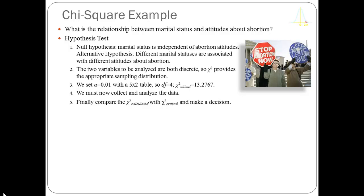Let's look at an example from the General Social Survey and look at computer output typical from something like SPSS or SAS — in this instance I'm going to use STATA. In the GSS we have a variable that measures marital status: married, separated, widowed, divorced, or never married. We have another measurement which asks whether a woman should be allowed to have a legal abortion for any reason. Both of those variables are discrete, so when I look at their intersection I'm trying to understand if there's a relationship between marital status and attitudes about abortion. Since both variables are discrete, chi-square provides the appropriate sampling distribution. I'm going to set alpha equal to 0.01. The table is a five-by-two table, so I have four degrees of freedom, giving me a chi-square critical of 13.2767.